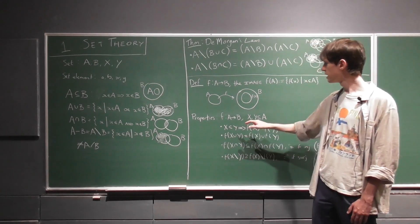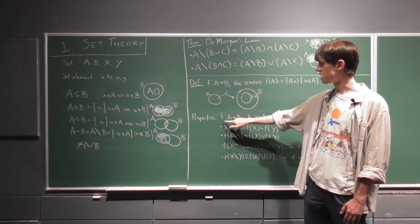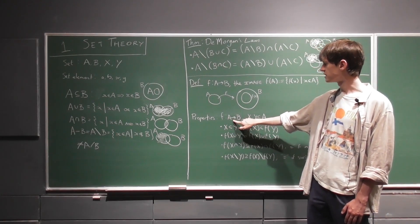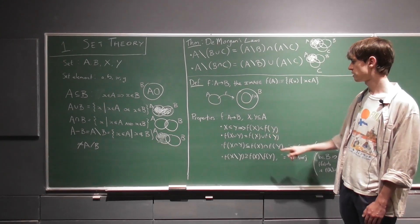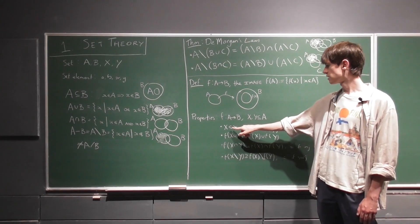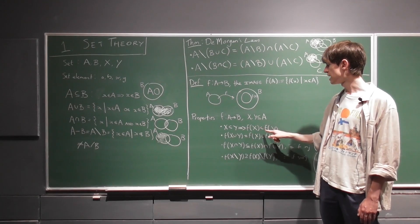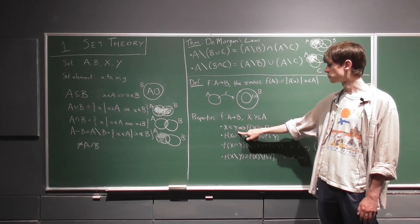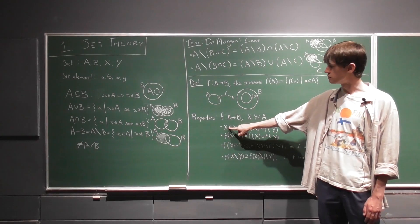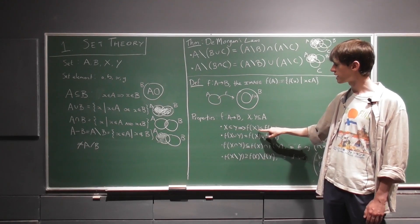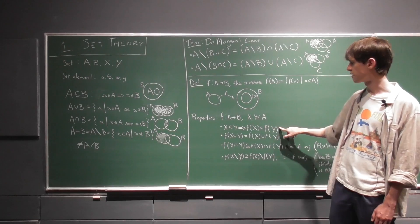So properties of images: if we just take f to be any function from sets A to B, and x and y just arbitrary subsets of A, well we see that the image is preserved, so that inclusions are preserved under images. So if x is a subset of y, that means that f of x is a subset of f of y.